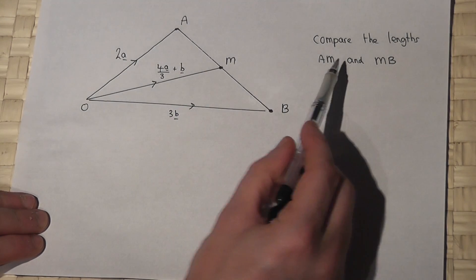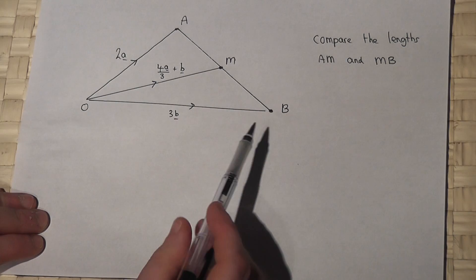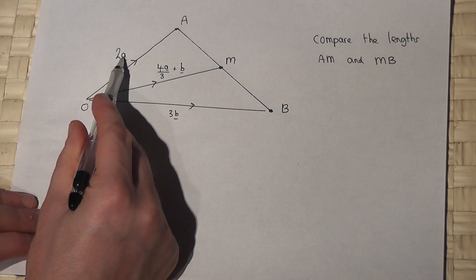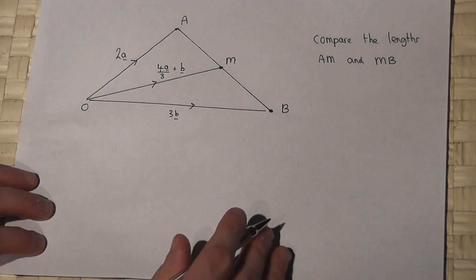Now the way to compare the length A to M and M to B is to find the vector of A to M and M to B in terms of lowercase a and lowercase b. So let's do this.